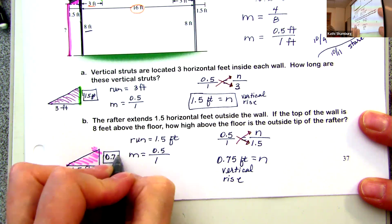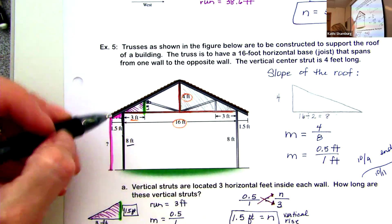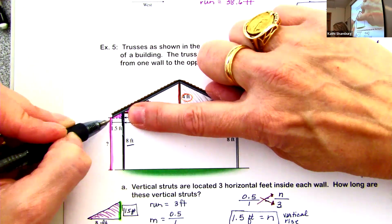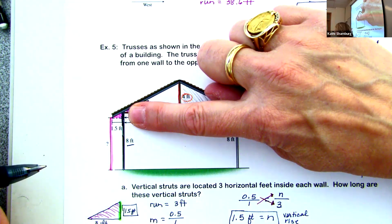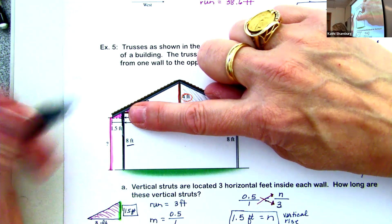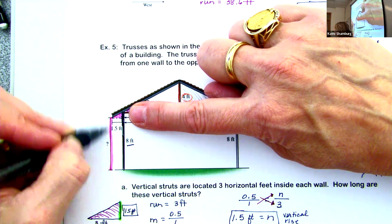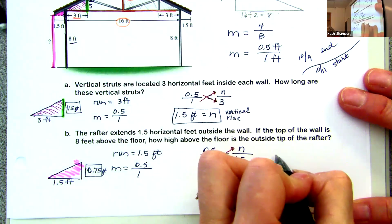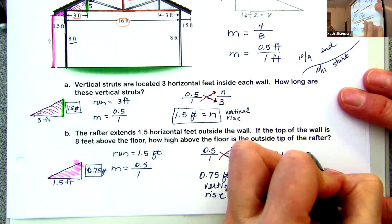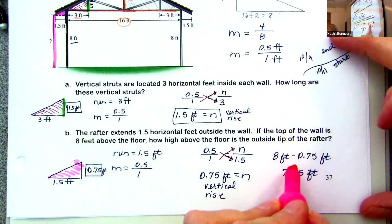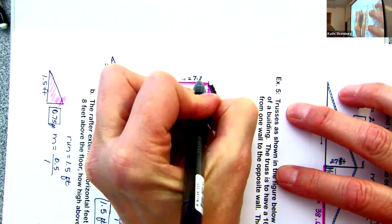We know this is 1.5 feet here to here. To find the height from floor to tip: we know the wall is 8 feet, so 8 minus 0.75 feet gives us 7.25 feet. That is the height of the outside tip of the rafter — 7.25 feet.